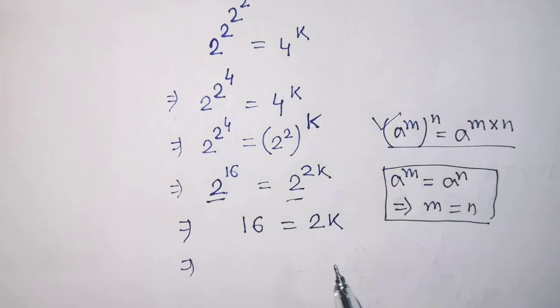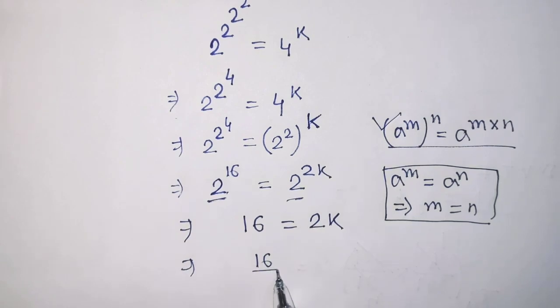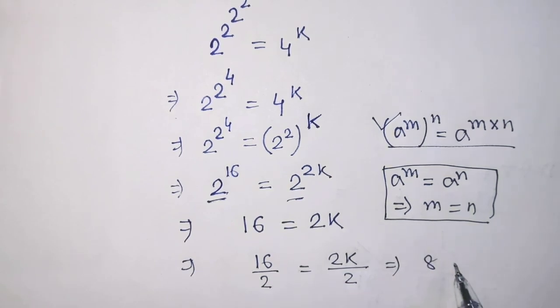Then it will be 16 over 2 is equal to 2 times k over 2. That is, 8 is equal to k.